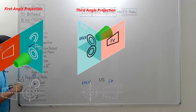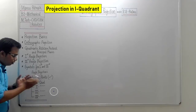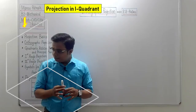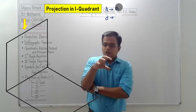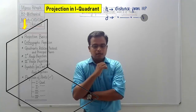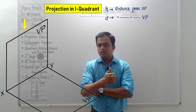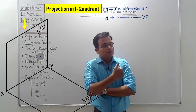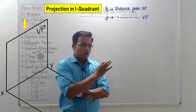Now let us implement everything we have learned to understand point projection in all four quadrants. There are two key things: if a point is in a particular quadrant, its distance from HP is represented by small h, and its distance from VP is represented by small d. If a point is above HP, it is in quadrant one or two; if below, quadrant three or four. If in front of VP, it's quadrant one or four; if behind VP, it's quadrant two or three.